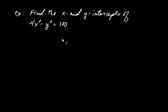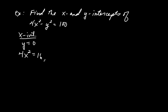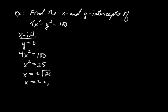Let's find the x and y-intercepts of this next curve. To find the x-intercepts, we set y to zero. So we have 4x squared equals 100, meaning x squared equals 25, so x equals plus or minus the square root of 25, which is plus or minus 5. Again, we have two x-intercepts: (5, 0) and (-5, 0).